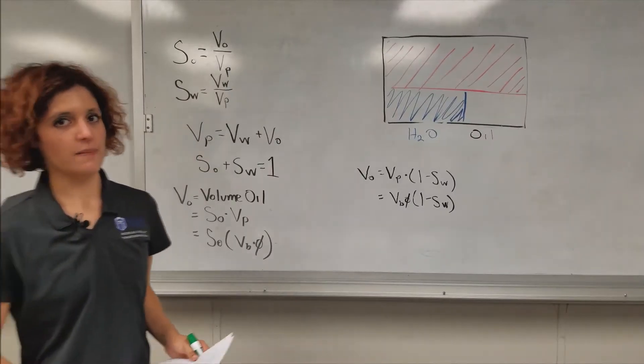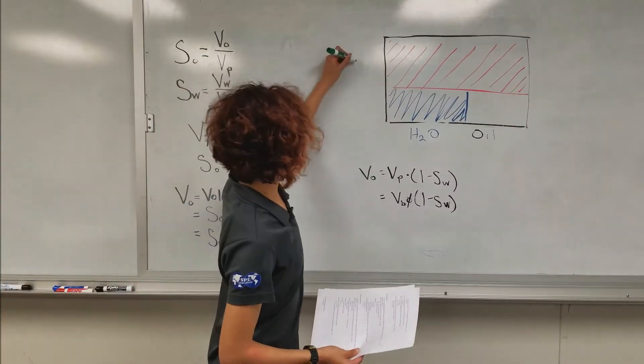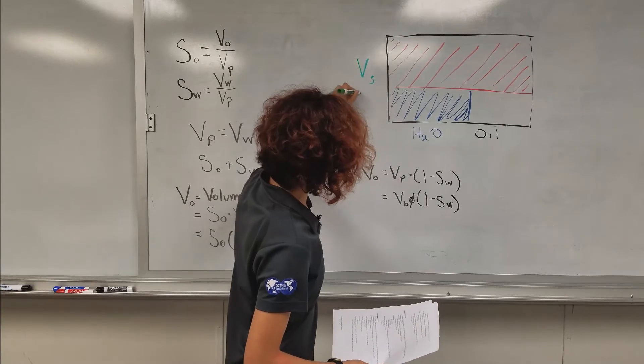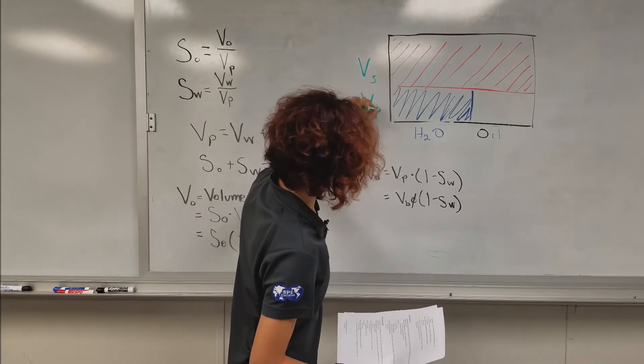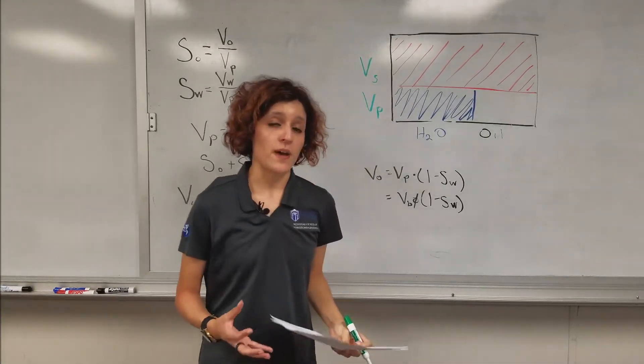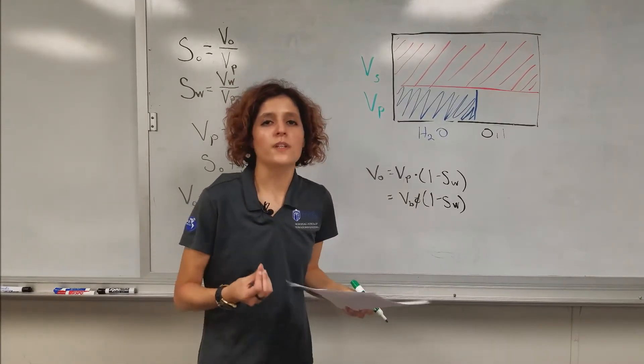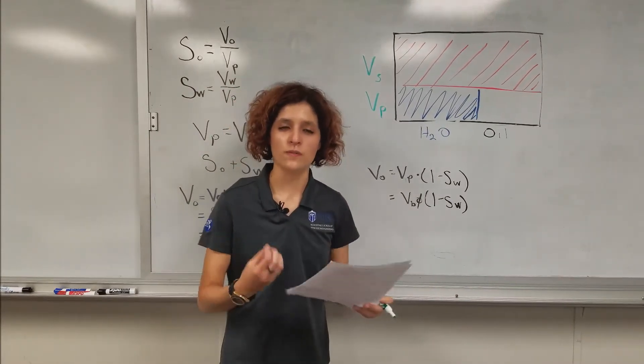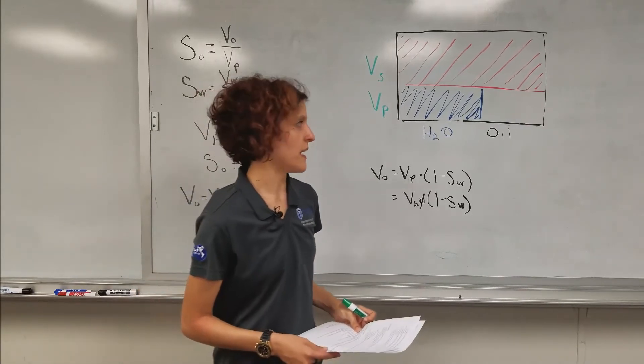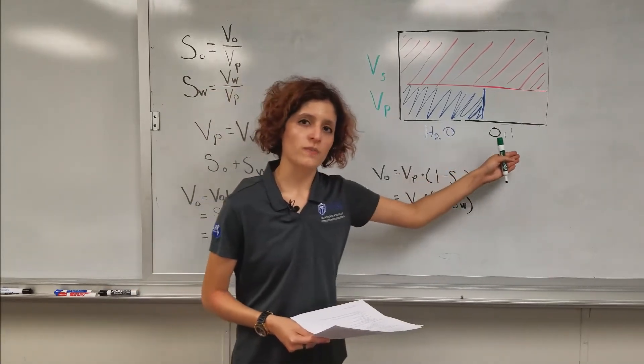Let's go back to our diagram. If you remember correctly, we had our volume of solids and our pore space volume. If we split up that pore space volume, what fluids are inside of our sponge? What fluids are inside of our reservoir? For this example, we've got water and we've got oil.